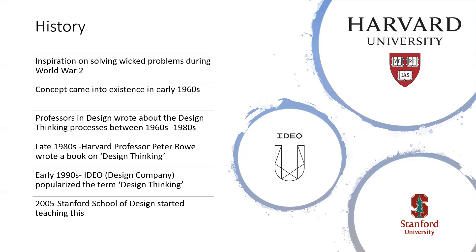The concept came into existence around the 1960s, where a lot of design professors started to write about design thinking between the 1960s and 1980s. Earlier it was mostly used by designers to solve problems like city layout — does the city have enough green cover, enough water bodies, enough infrastructure at the right places? So it started off as something broad, and then also got into different aspects of design, because design in itself has many different areas.